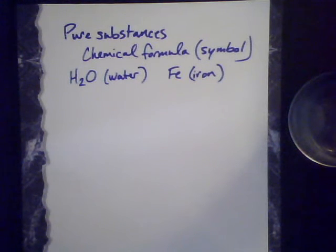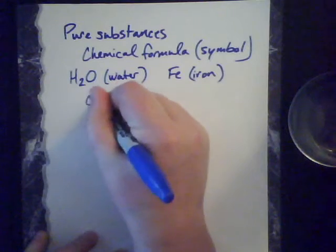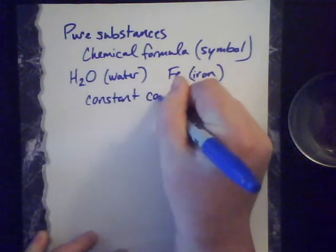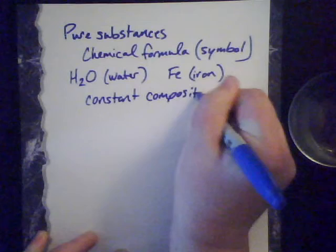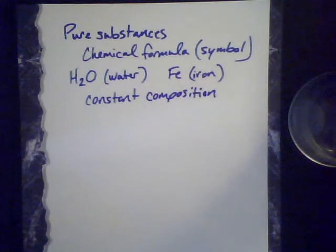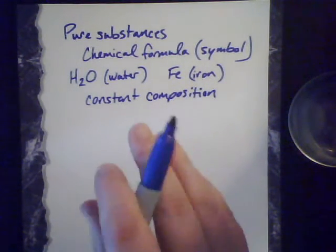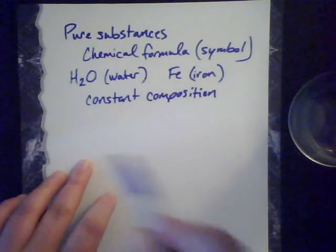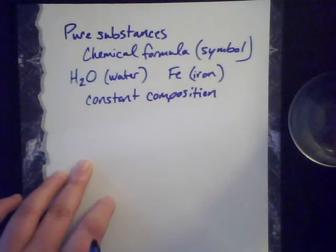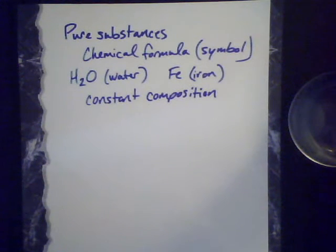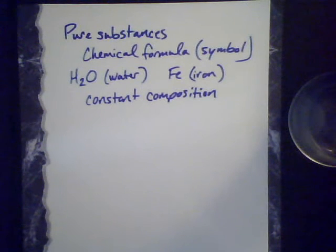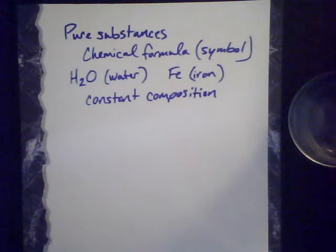The other thing about pure substances is they have to have a constant composition. What I mean by this is that if you take a sample from one side, a little bit from the top, a little bit from the side, you always come up with the same ratio of components — you always come up with the same stuff that's in there. This isn't true in mixtures, but it is true in pure substances, so constant composition is really important when making this distinction.